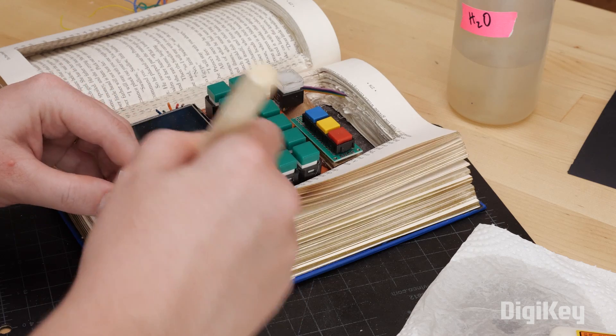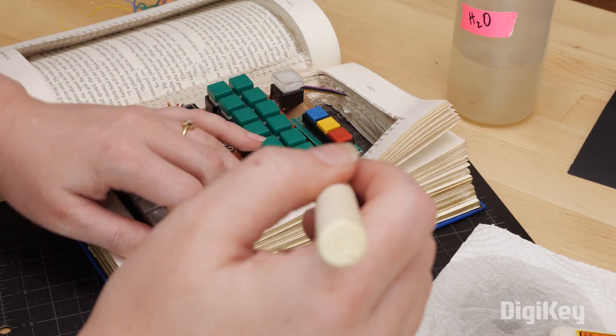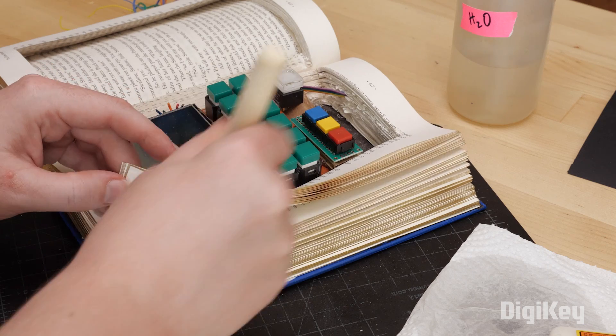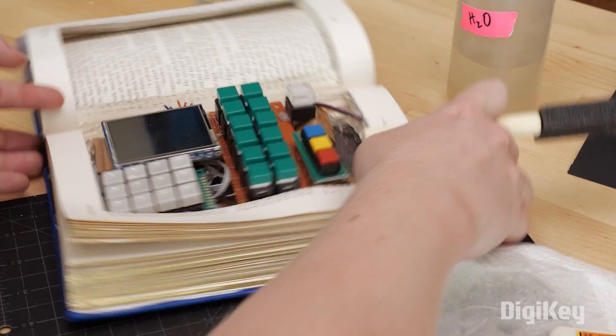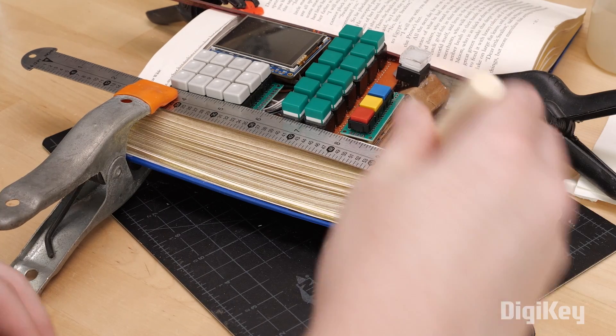Then I used little pieces of cardboard and my hot glue gun to secure the components in place. At this point, I've given up on the idea that the book will fold shut again, so I started gluing the pages to each other in the flipped open position. I used rulers and clamps to hold the pages together while the glue dried.